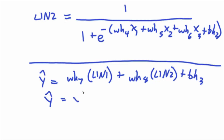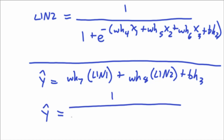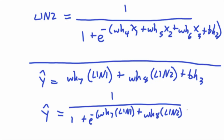If you wanted to use a different output activation — for example, if you wanted logistic as your final output activation — you would just wrap the equation: 1 over 1 plus e to the negative of (weight 7 times L1N1 plus weight 8 times L1N2 plus bias 3). Super simple math. Forward propagation is nothing to be scared of. But let's look at Excel and see how this is actually done.